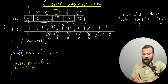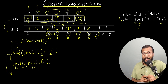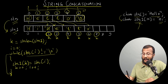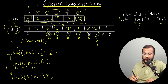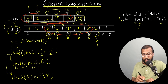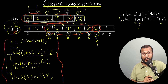When i becomes 5, we check the condition: str[5] is null, so 'null is not equal to null' is false. The loop becomes false and we come outside the loop. That means all characters from str have been copied to the end of str1. Now I just need to place the null character at index k (which is 7) of str1, so I write str1[k] = '\0'. The string 'hello' has been successfully concatenated.